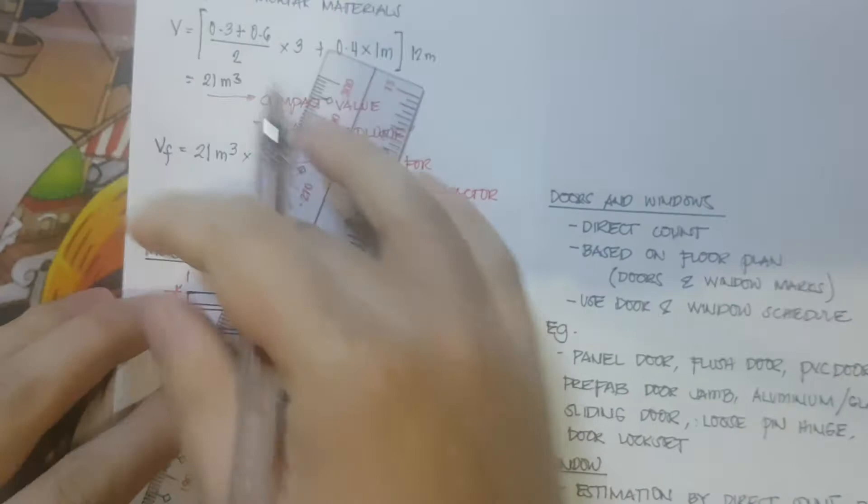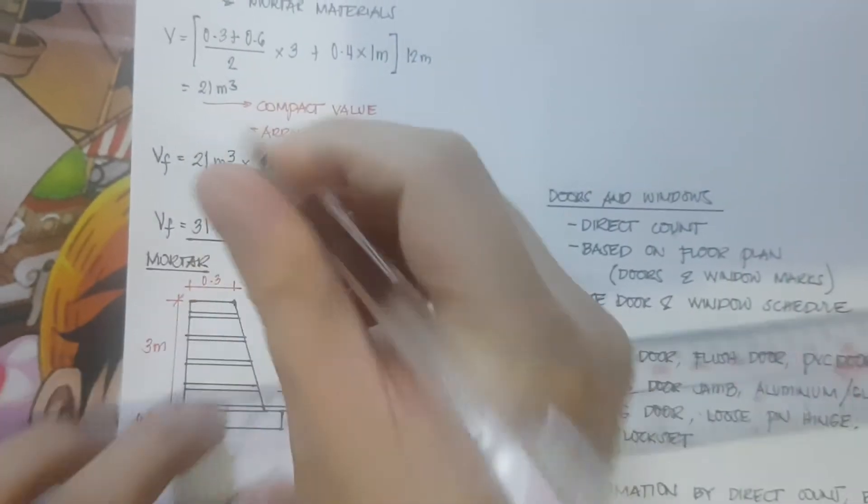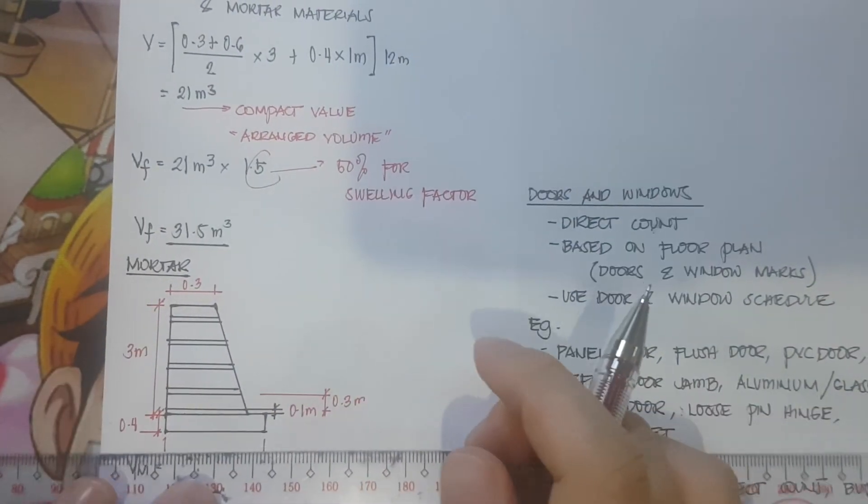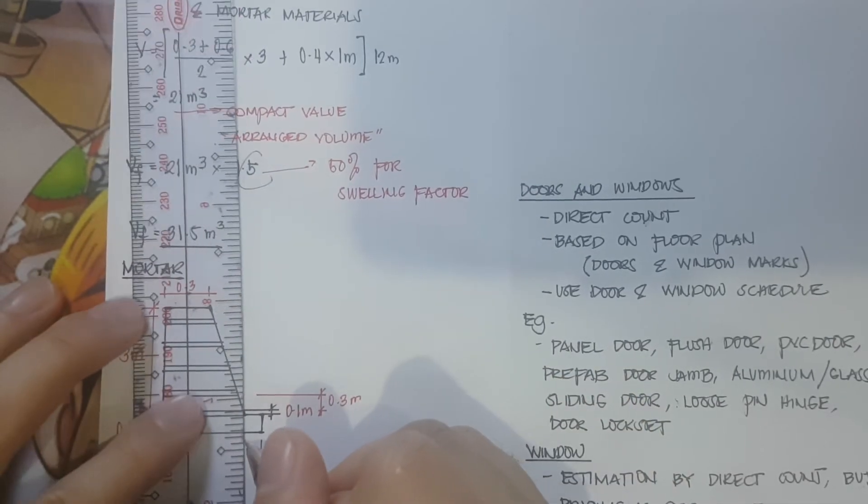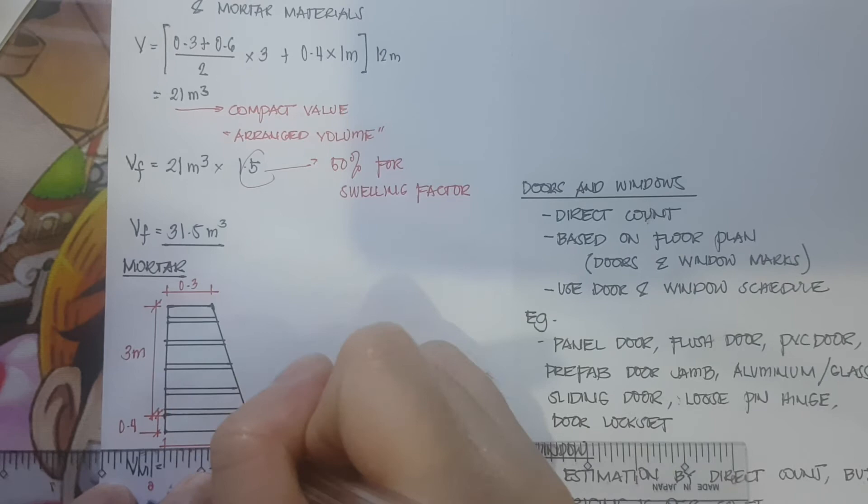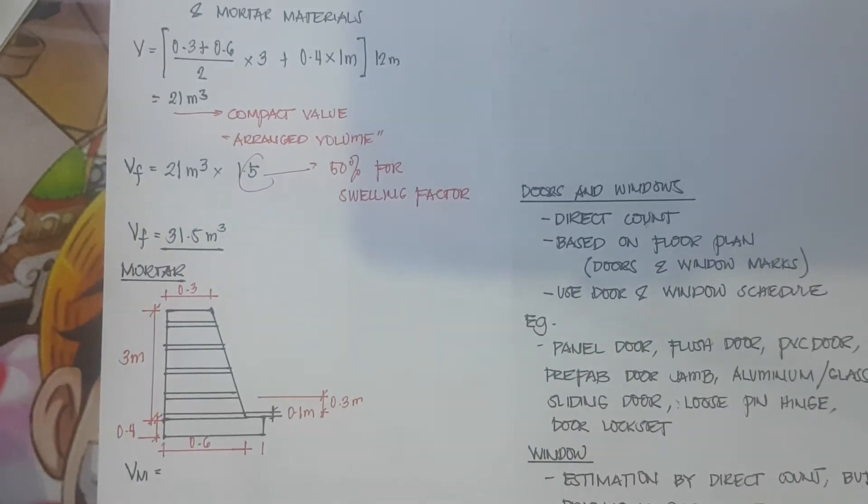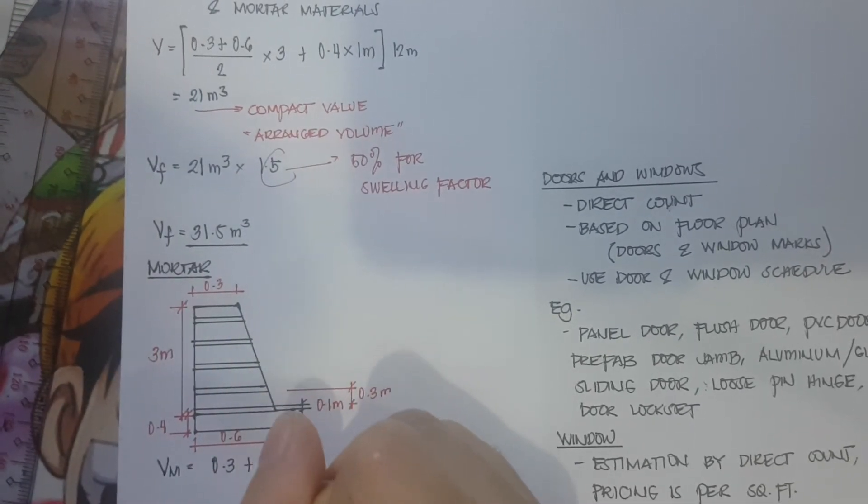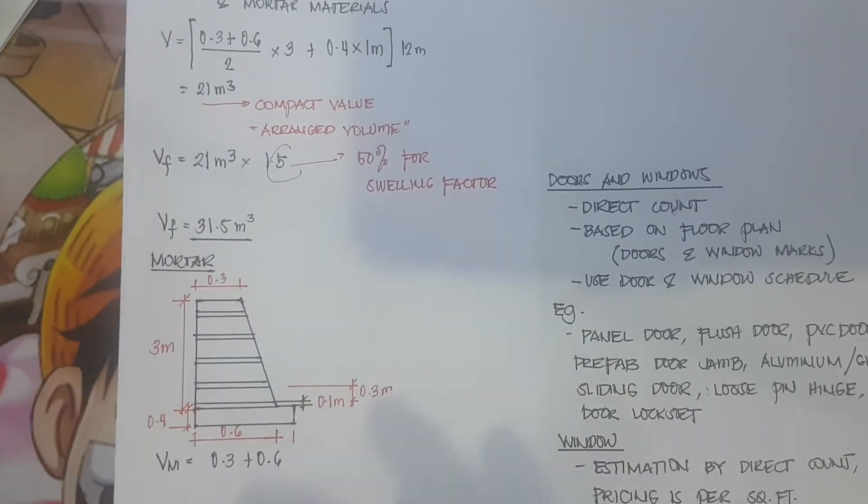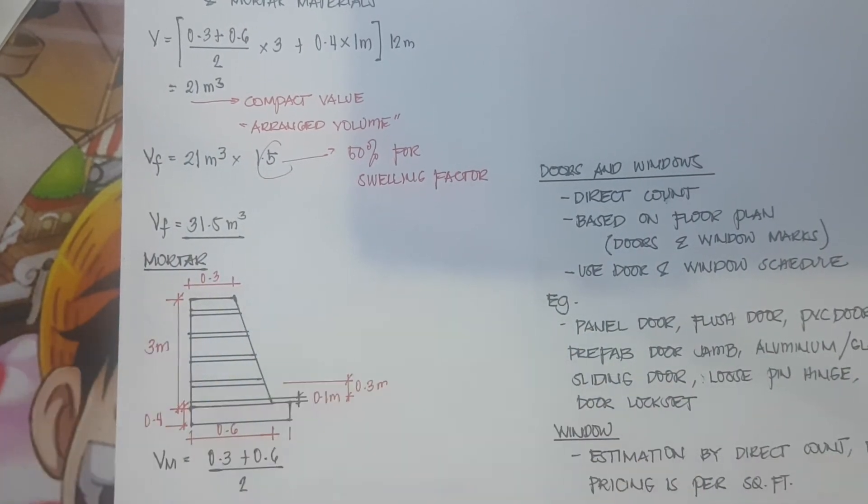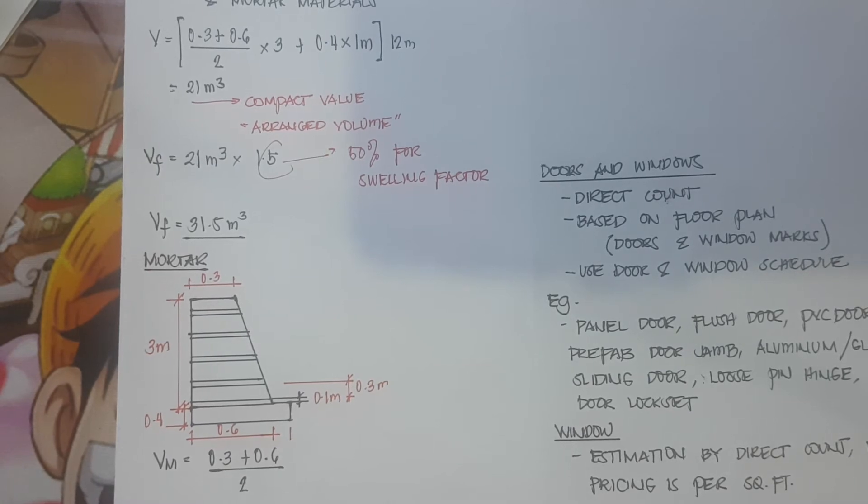The thickness here is 0.6. So for the volume of the mortar we have 0.3 plus 0.6, because that is a trapezoid, divided by 2 to get the cross-sectional area, times 0.10 because that is the thickness of the mortar.